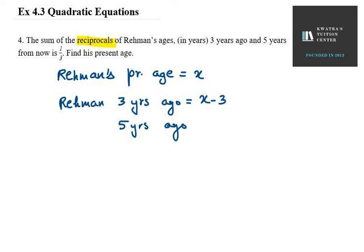So the sum of the reciprocals: Raman's present age is X, 3 years ago is X minus 3, and 5 years from now it will be X plus 5.